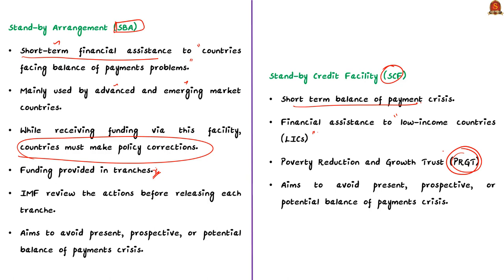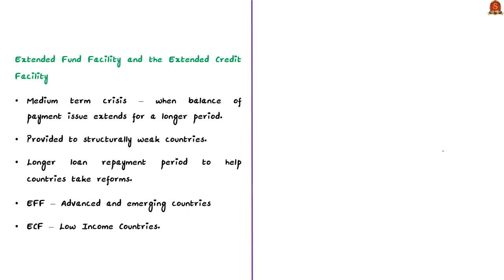When the BOP crisis extends for a protracted period, the IMF provides support through the Extended Fund Facility or Extended Credit Facility. Both these facilities provide financial assistance to countries facing serious medium-term BOP problems due to structural weaknesses that require time to address. To help countries implement medium-term frameworks, these facilities offer longer program engagement and longer repayment periods. Advanced and emerging economies are offered the Extended Fund Facility, and low-income countries are provided the Extended Credit Facility.